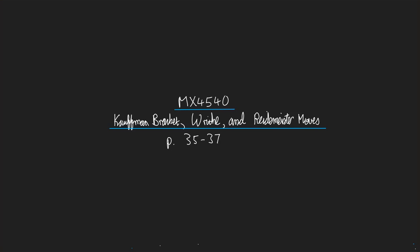Hello and welcome to a mini-lecture about the Kauffman bracket, the writhe, and Reidemeister moves. The Kauffman bracket is something we've seen in a previous mini-lecture. It's one of the ingredients in the definition of the Jones polynomial. The writhe, we haven't seen yet, but I'll define it for you. It's the other ingredient in the definition of the Jones polynomial. I'm going to tell you how these two ingredients change under the Reidemeister moves.